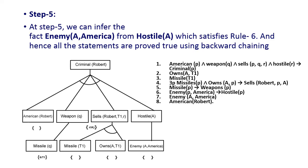In step 5, we infer Enemy(A, America) from Hostile(A), which satisfies rule 6: Enemy(p, America) ⟹ Hostile(p). Hence all the statements are proved true by using the backward chaining algorithm. That's all about backward chaining algorithm, and in the next video we will see another important topic from artificial intelligence. Thank you.